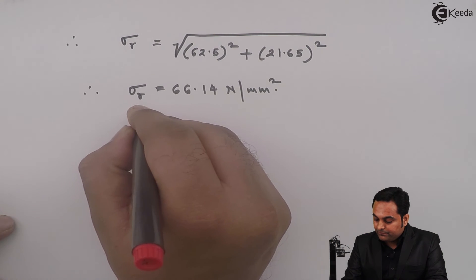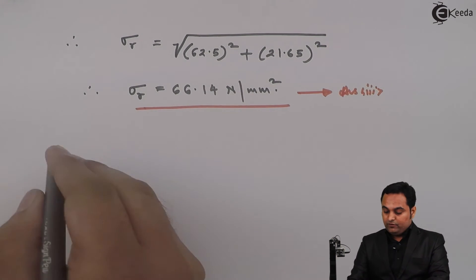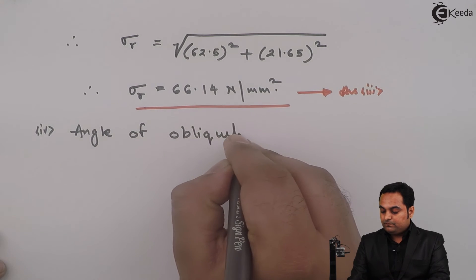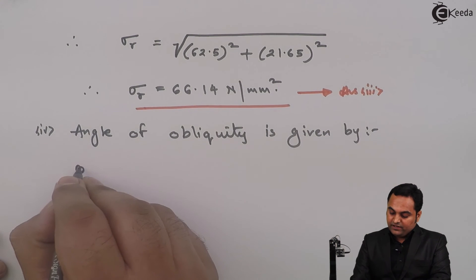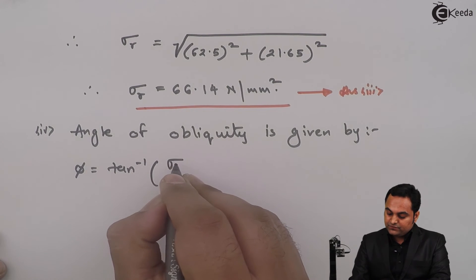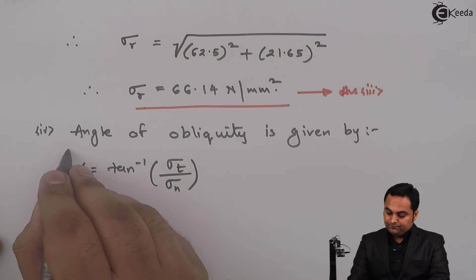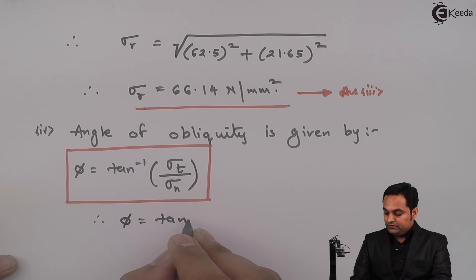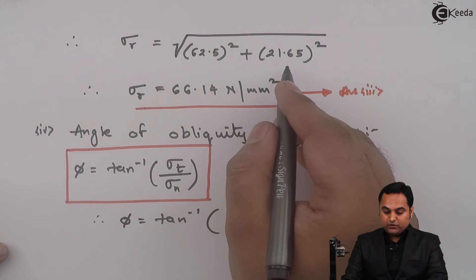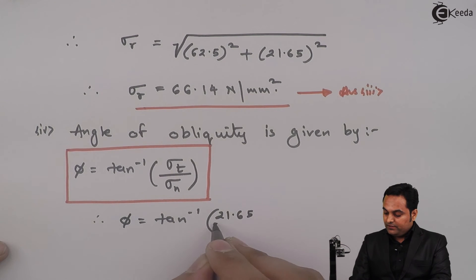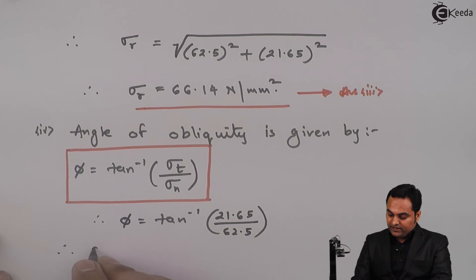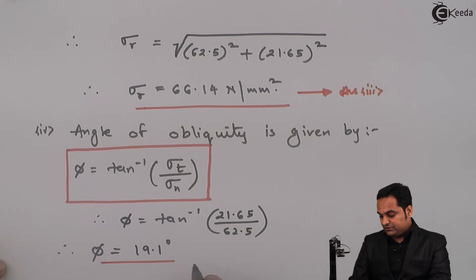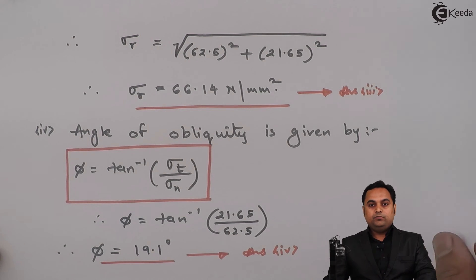After this, the angle of obliquity — denoted by phi — is given by: φ = tan⁻¹(Sigma T / Sigma N). Putting the values: φ = tan⁻¹(21.65 / 62.5). Therefore phi comes out to be 19.1 degrees. This is the fourth answer.